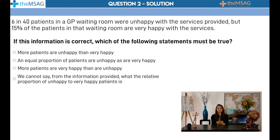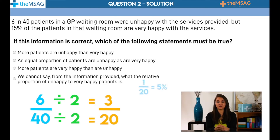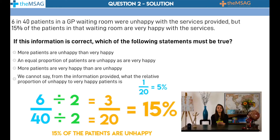Again, let's convert our fractions to affirmative percentages. 6 in 40 is not so easy, as it doesn't appear in our list, so we simplify it by dividing. Dividing this fraction by 2 simplifies it to 3 in 20. If 1 in 20 is 5%, then 3 in 20 is 15%, so 15% of the patients are unhappy with the room service. This is equal to the percentage of patients who are very happy with the service provided. Hence, the answer must be: an equal proportion of patients are unhappy as are very happy.